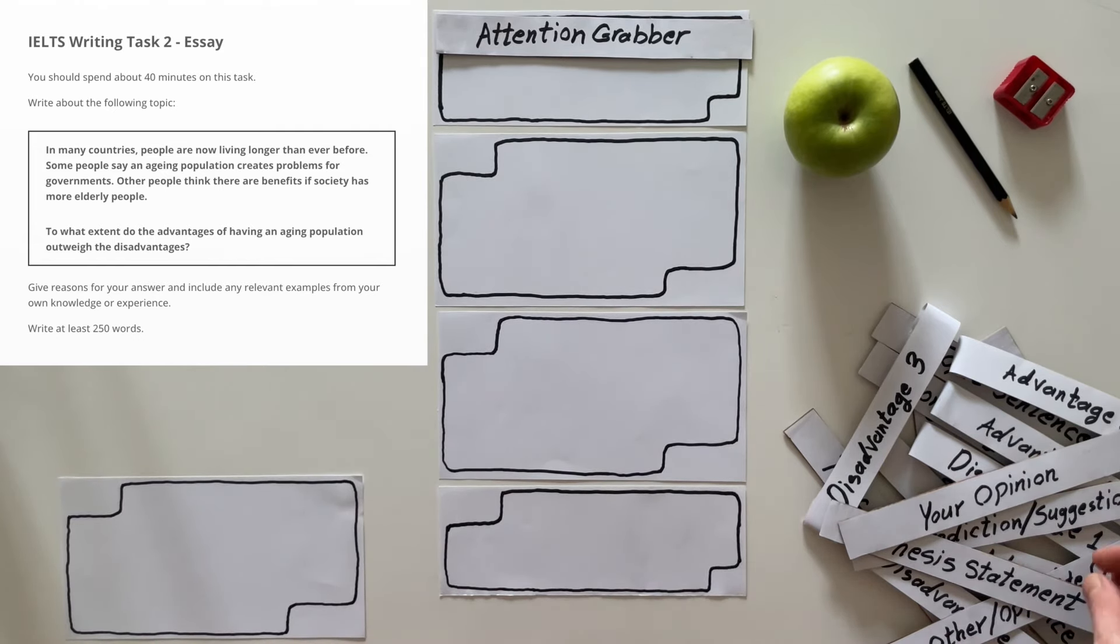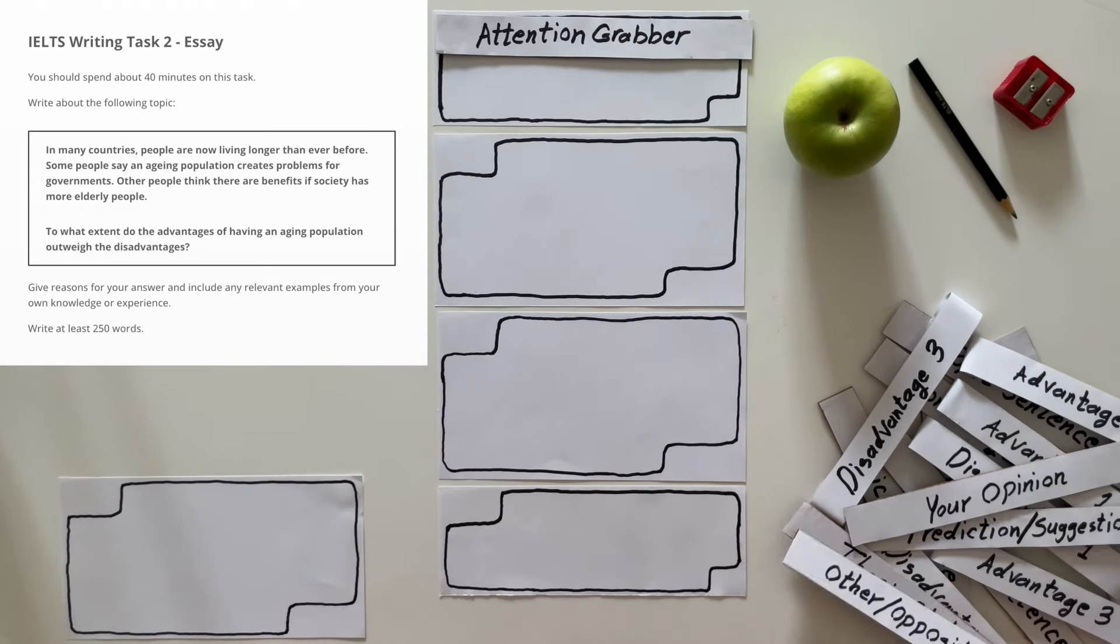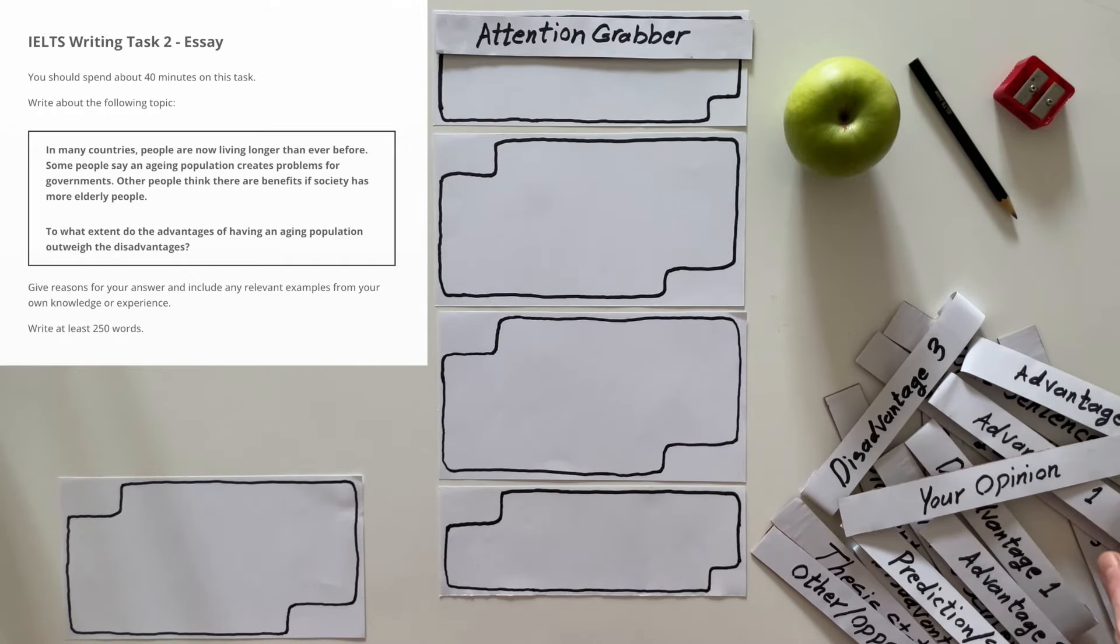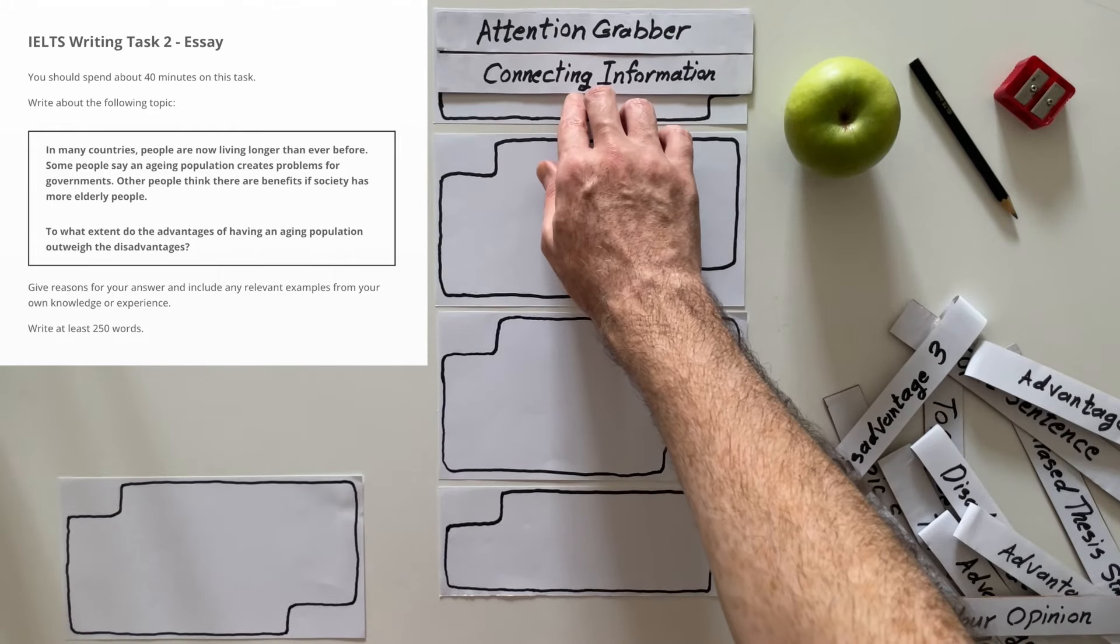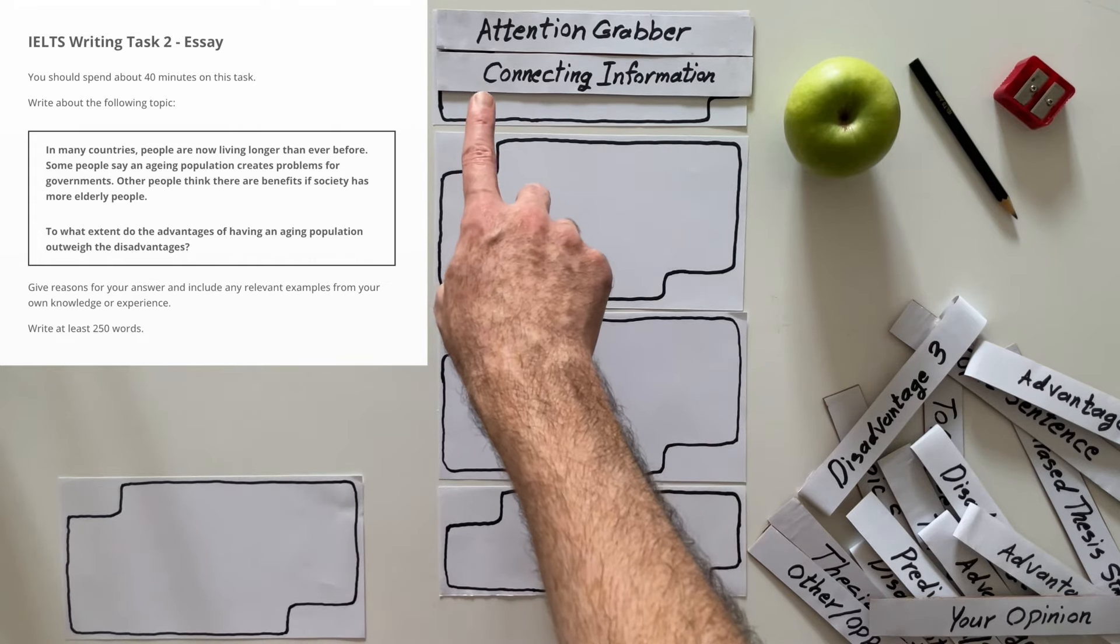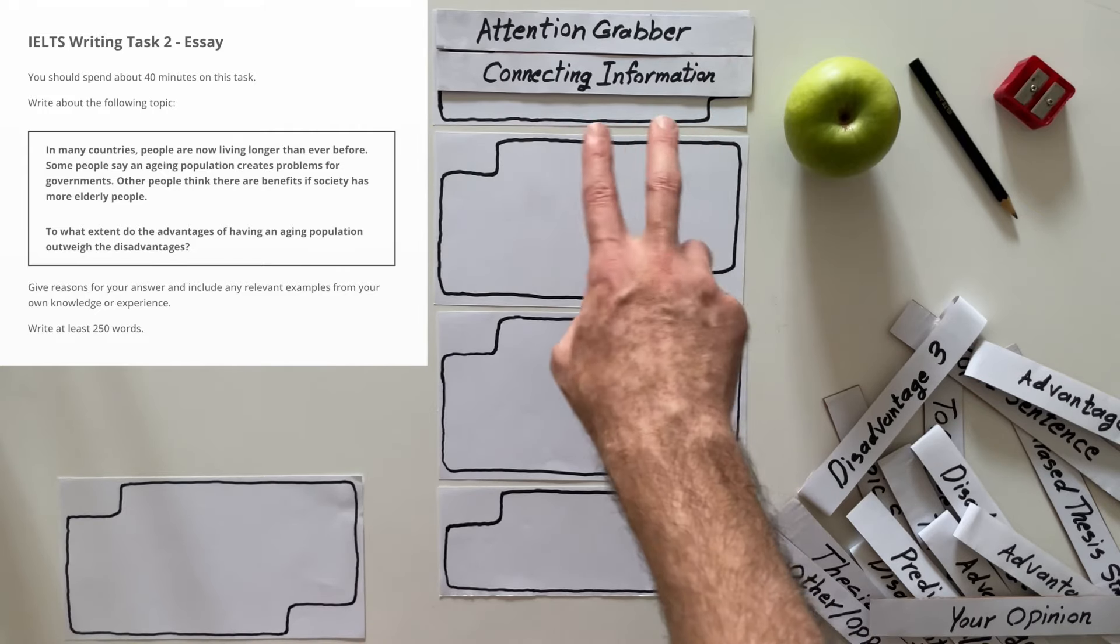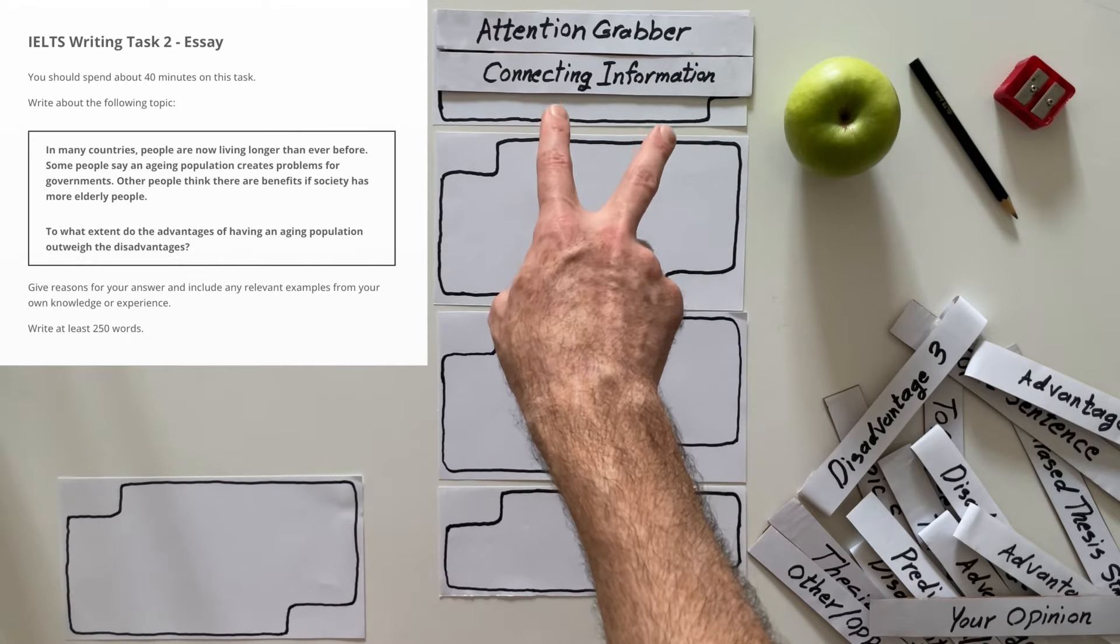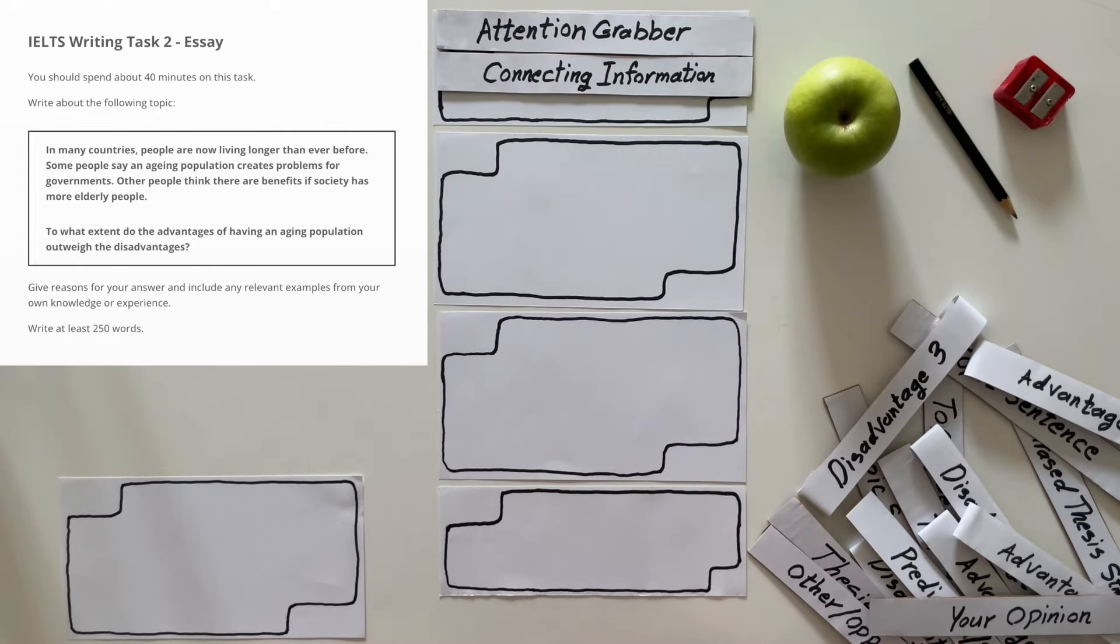The next one, we need to have some connecting info. Now, we actually have a very easy job here regarding the connecting info part. Let me tell you why. Because, actually, we have two camps. And we just need to introduce the two camps here. There are some people who believe old people are good for the society. There are some people who believe that old people are bad for the society. That's what we are going to say. You just acknowledge the existence of these two groups of people, and that's it. It's very easy.